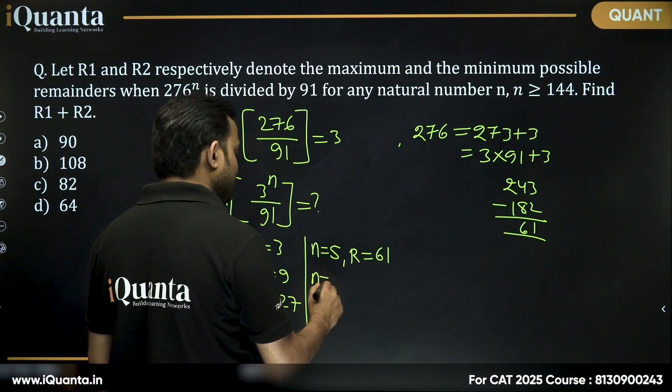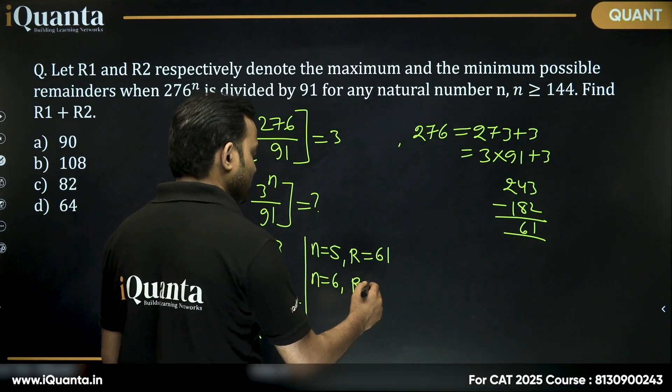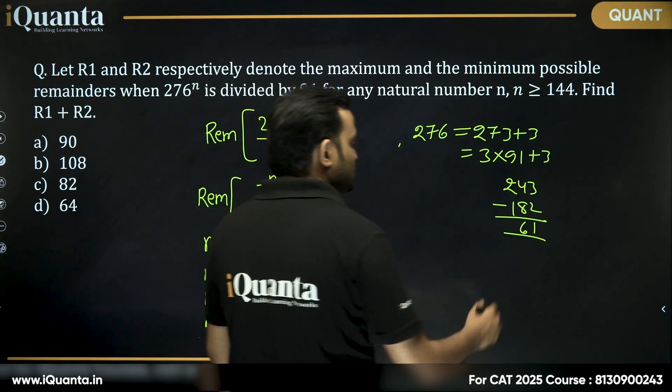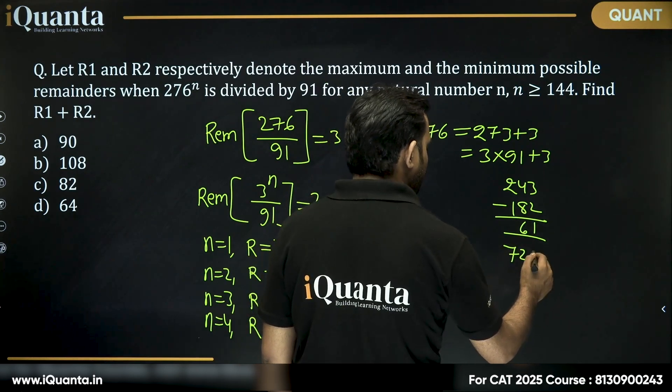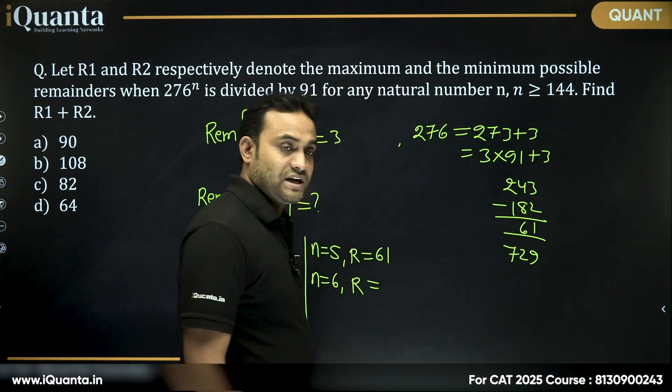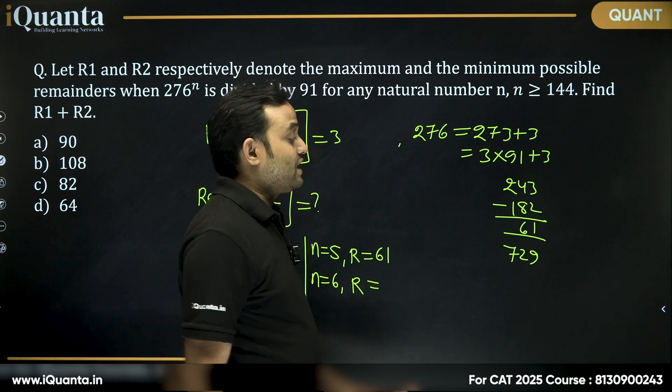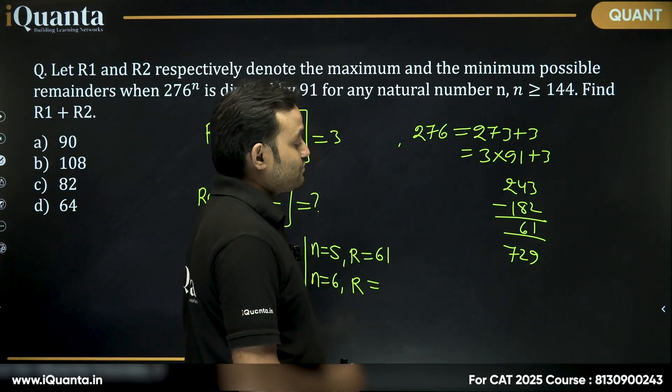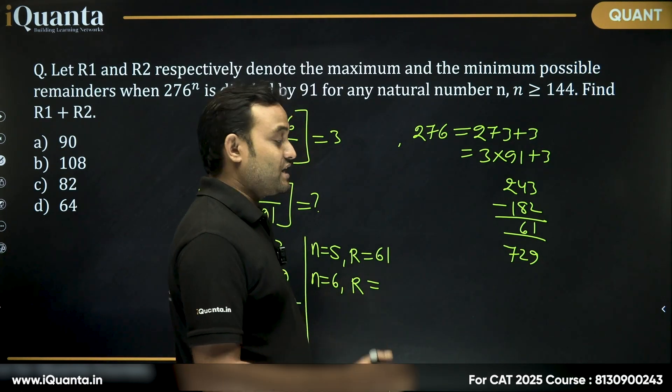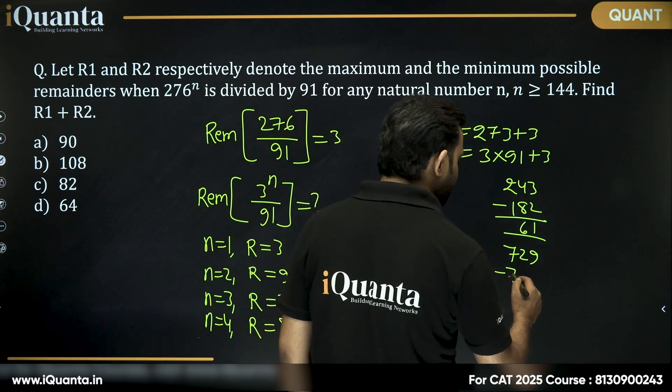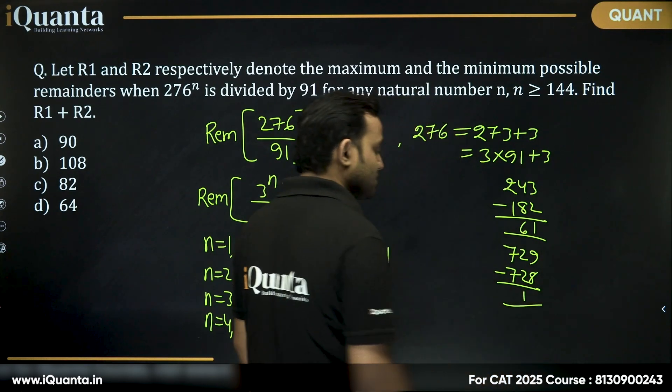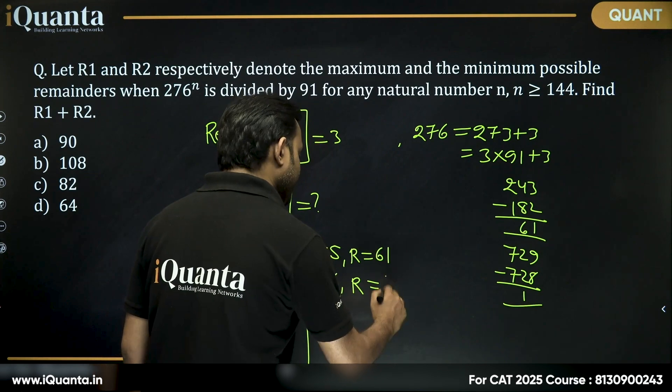Then again, if I take n equals 6, remainder R will be equal to... So 3 to the power 6 is 729. Now 729 when divided by 91, what will be the remainder? So 91 into 8 is 728. So remainder is 1.